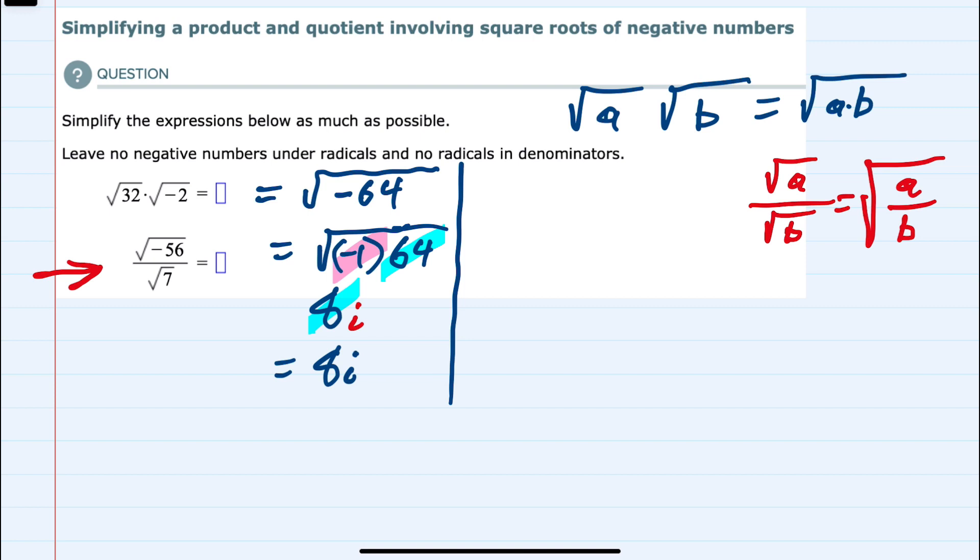And then for the second part of the problem, we have two radicals being divided, so I'm going to combine that into one radical of negative 56 over 7. Which I can then simplify the radical, negative 56 divided by 7 is negative 8.